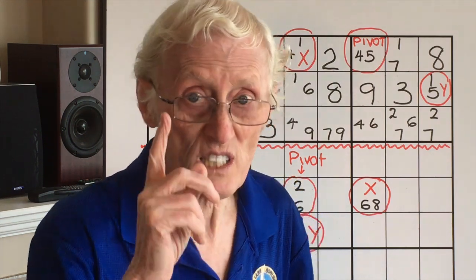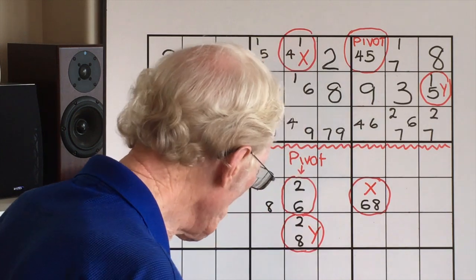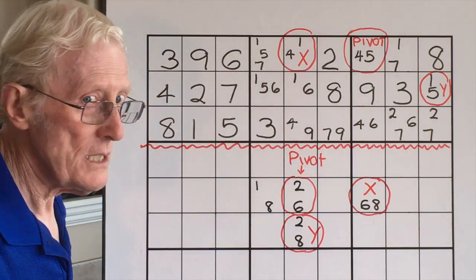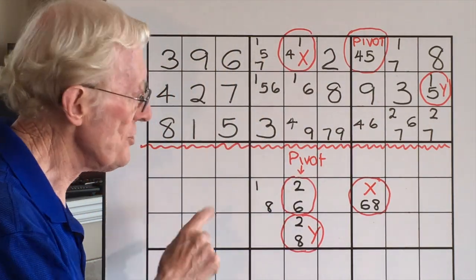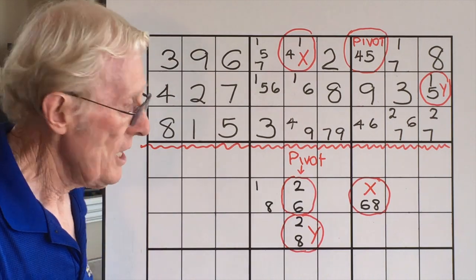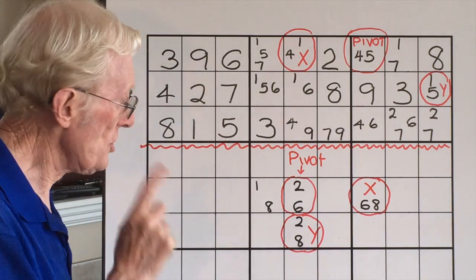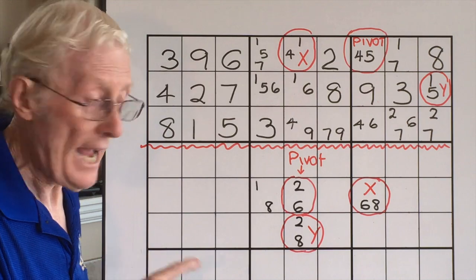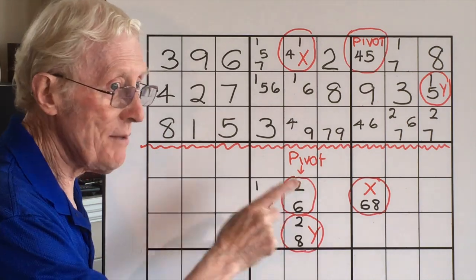This is two examples of the XY wing. They're hard to spot. I found you have to really watch to find these numbers. Because what you're looking for is this: you're looking for three numbers in three cells.